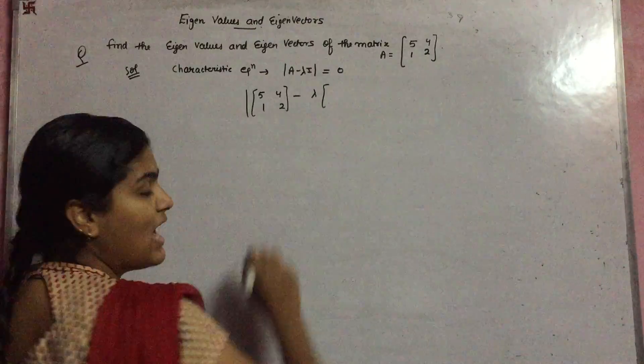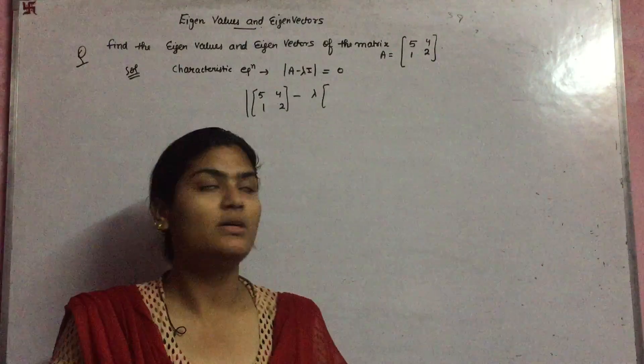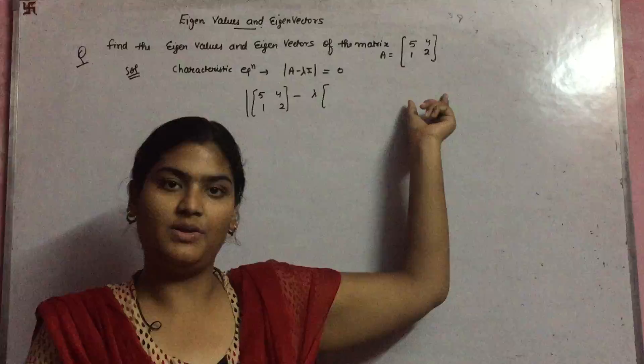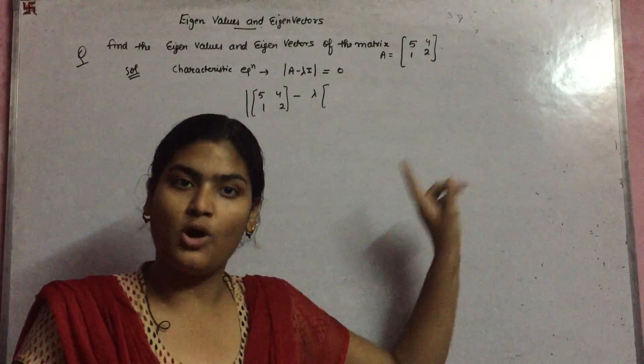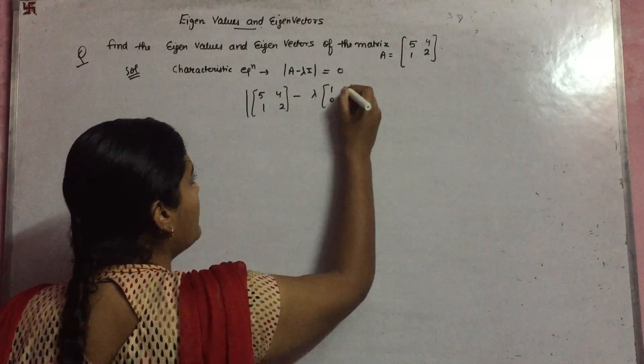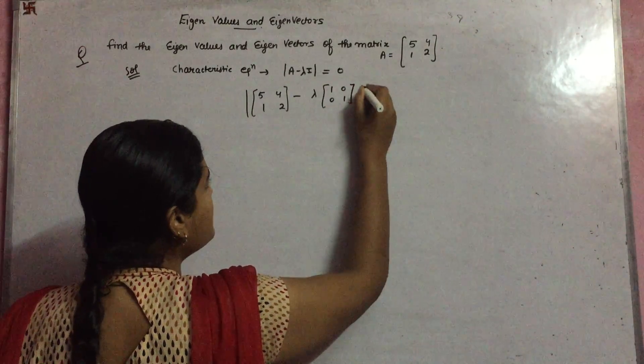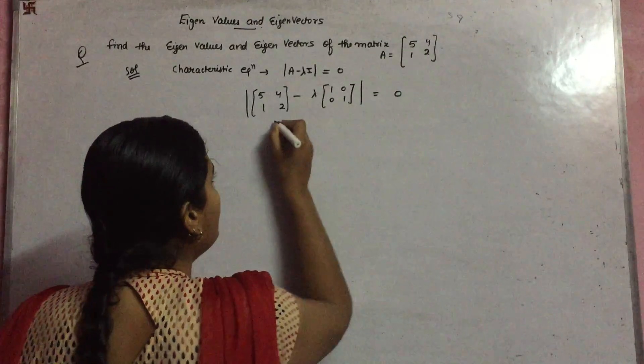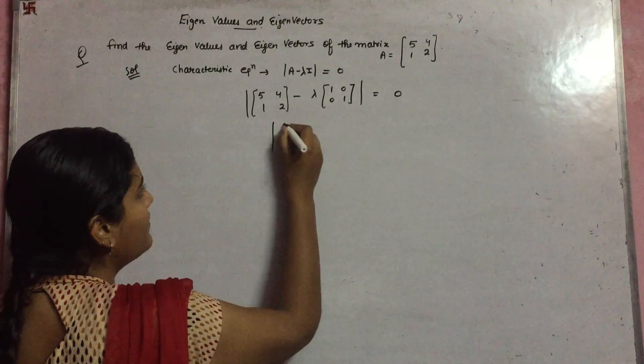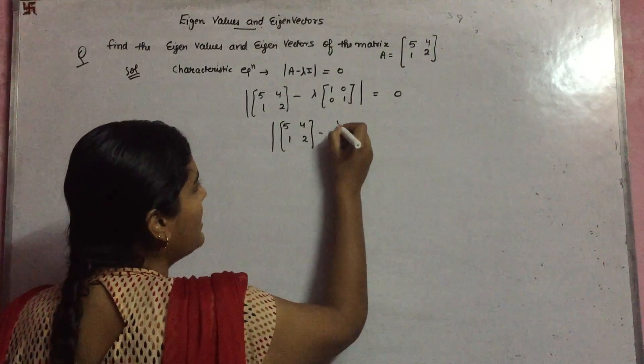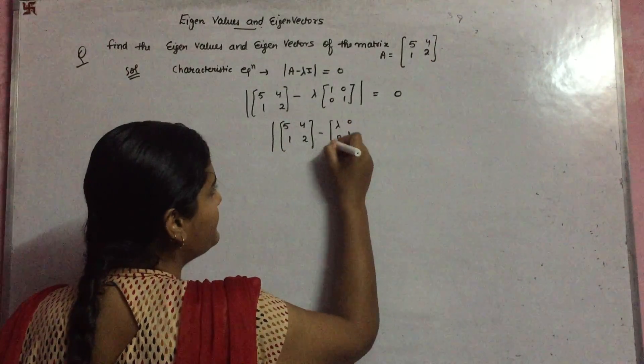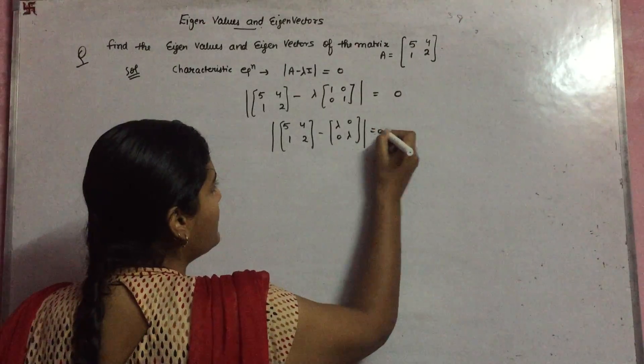So what will be [[5,4],[1,2]], this is matrix A, minus λI. I is the identity matrix of the same order as the given matrix, which is 2×2. There are two rows and two columns, so you take the identity matrix of 2×2 order. This is how we find it.